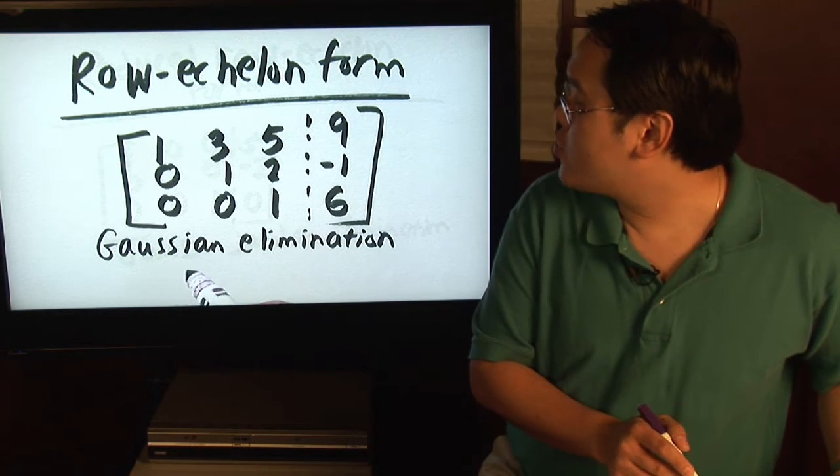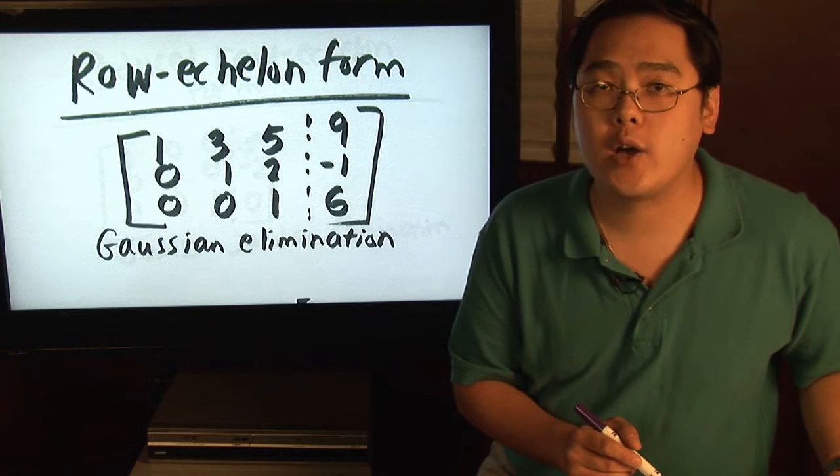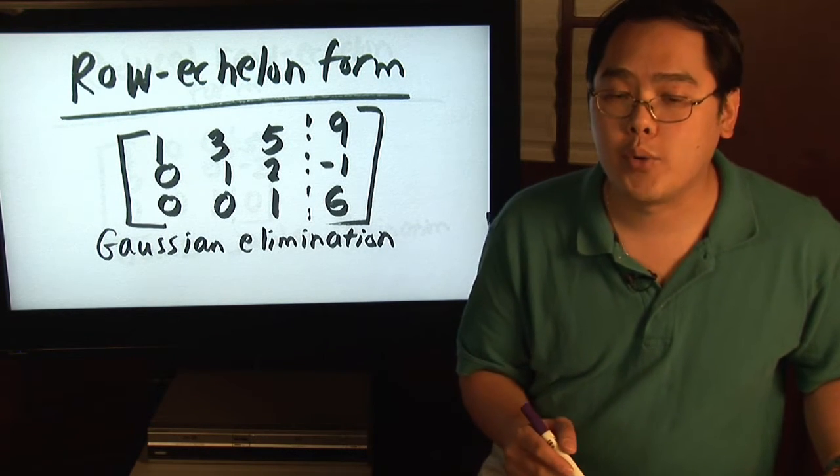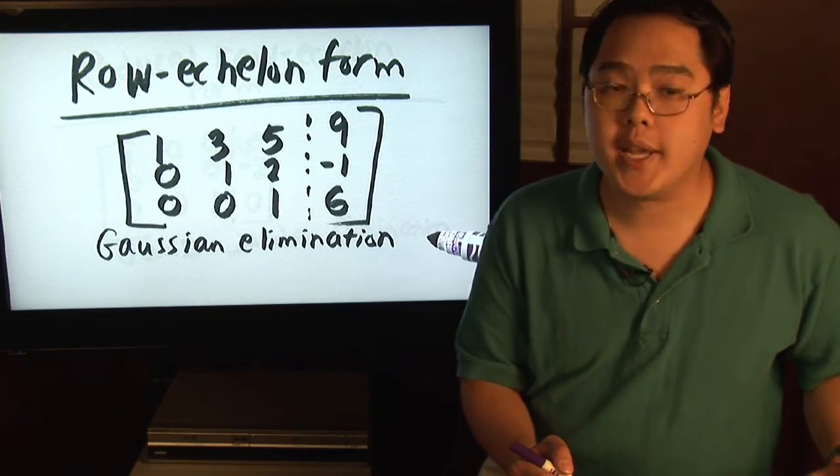Now, to get to row echelon form, you need what's called Gaussian elimination. It's a series of row operations that will get you to this particular form, but here's how this works.